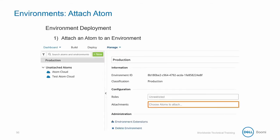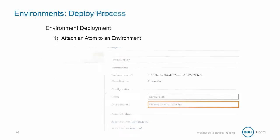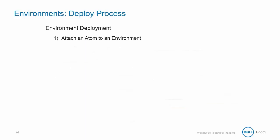An atom is attached to an environment via the environment pane. To attach an atom to an environment, simply highlight the environment and select the atom from the attachments list shown here. Once you complete that, the atom will then be attached to the environment.